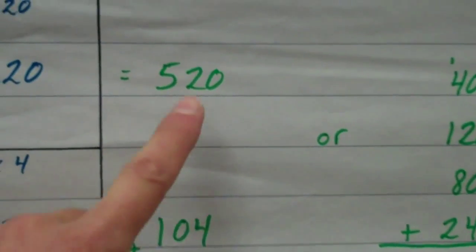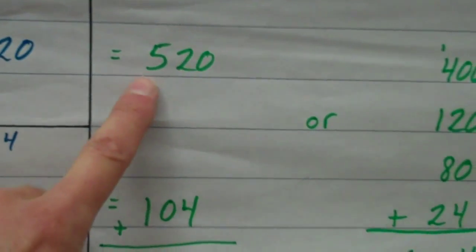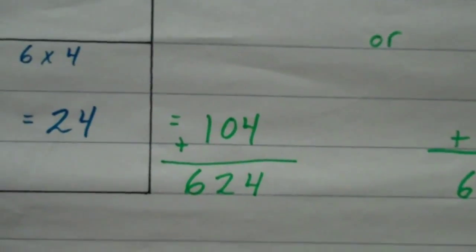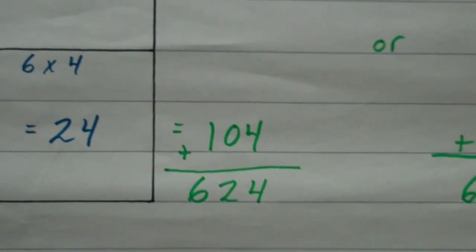I find the sum of those two numbers. That is 104. So, I simply take 520 plus 104, find the sum, 624.